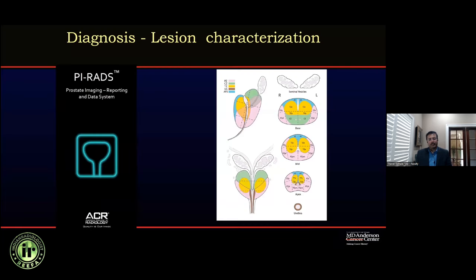As we all know, ACR actually adopted PI-RADS over the past couple of years. With the introduction of PI-RADS, they started giving a structured report in terms of identifying clinically significant disease in the prostate gland, especially when you have a focal lesion. In order to maintain a uniform language across radiologists and clinicians, PI-RADS helps us speak a lexicon that is uniform and consistent across the board.